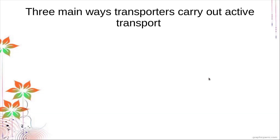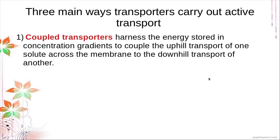There are three main ways transporters carry out active transport. First is coupled transporters. Coupled transporters harness the energy stored in concentration gradients to couple the uphill transport of one solute across the membrane to the downhill transport of another. For coupled transporters, they are usually either symports or antiports.